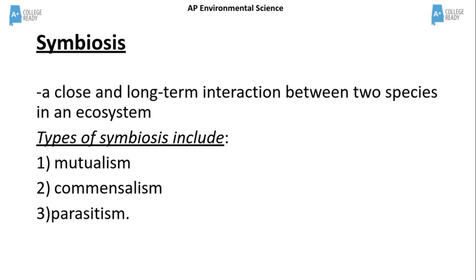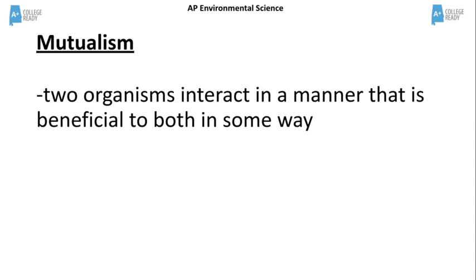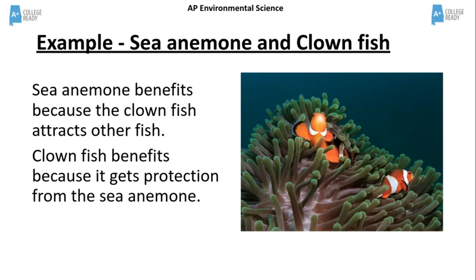Symbiosis is a general term for the interaction between two species in an ecosystem. It involves a close and long-term relationship. Three types of symbiosis include mutualism, commensalism, and parasitism. A mutualistic symbiotic relationship occurs when two organisms interact in a way that is beneficial to both. An example is the sea anemone and clownfish — the sea anemone benefits because the clownfish attracts other fish, which provide food, and the clownfish benefits because it gets protection from the sea anemone.